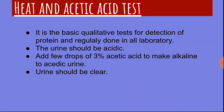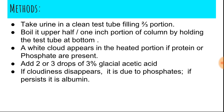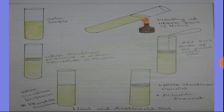Method: take urine in a clean test tube, filling two-thirds of the tube. Boil the upper half or one-inch portion of the column by holding the test tube at the bottom. A white cloud appears in the heated portion if protein or phosphate are present. Then add two or three drops of three percent glacial acetic acid. If the cloudiness dissipates, it is due to phosphate. If the cloudiness persists after adding glacial acetic acid, then it is albumin.